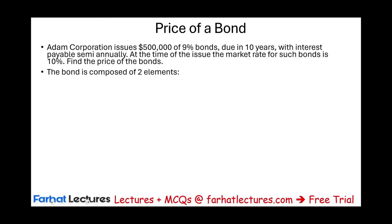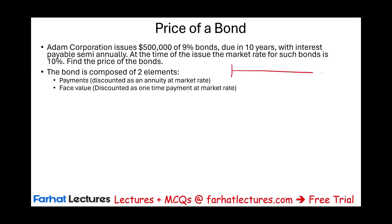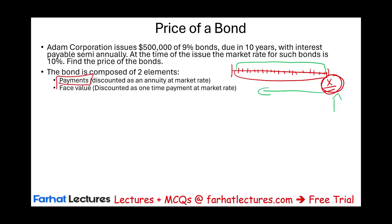The bond is composed of two elements: the periodic payments and the face value. As the investor and creditor, you will receive 20 payments and then the face value — a series of payments and a lump sum. To find the price of the bond, you discount both of those items to present value. You take the payments, which form an annuity, and the face value of the bond, and discount them using the market rate, because every investor wants to earn the market rate.